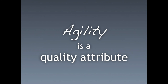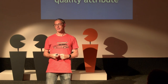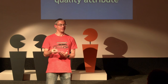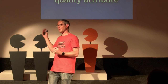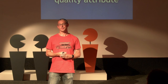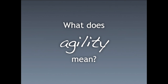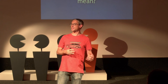Agility is a quality attribute. We often talk about quality attributes and non-functional requirements when we talk about architecture. If you need agility, you need to bake it in. How much agility do you need? Think about it as a non-functional requirement. What does agility mean when we talk about it together with software architecture?